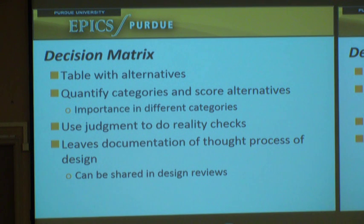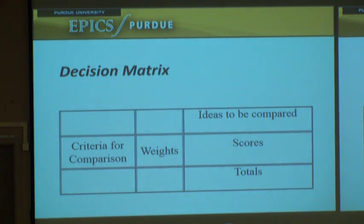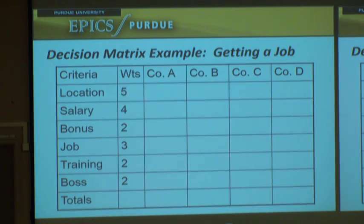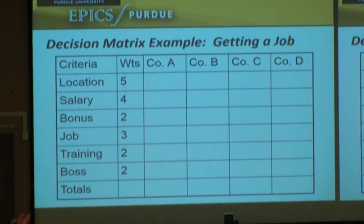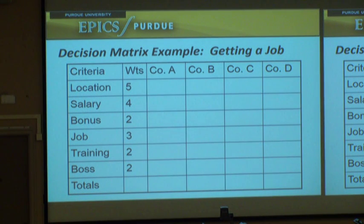We want to do things systematically in design. A decision matrix is a way to come up with different ideas and systematically evaluate them. You make a table — the idea is you've got criteria, you've got weights, and then you've got ideas you're going to compare. This is an example like, I've got so many job offers, I need to weigh them — I'm going to use the decision matrix.